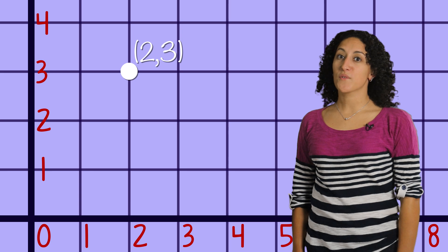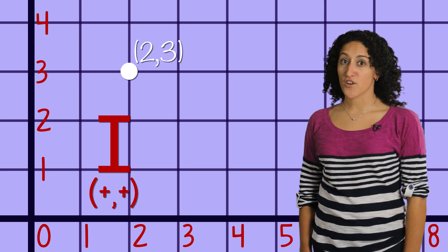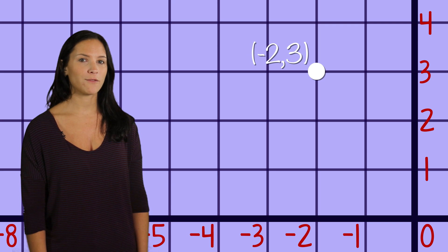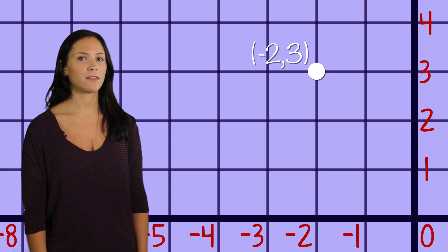When both numbers are positive, we find our point here in the first quadrant. But a negative x-value like negative 2 brings us left on the graph. Now we're at (-2, 3) in the second quadrant.